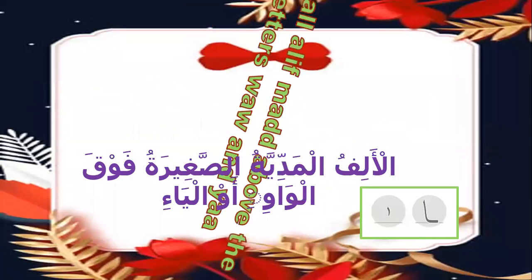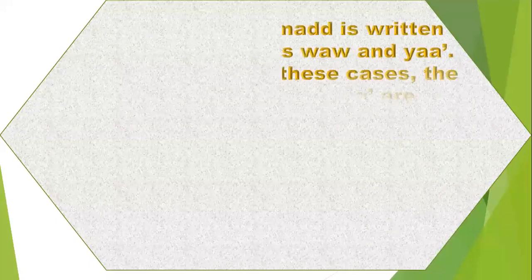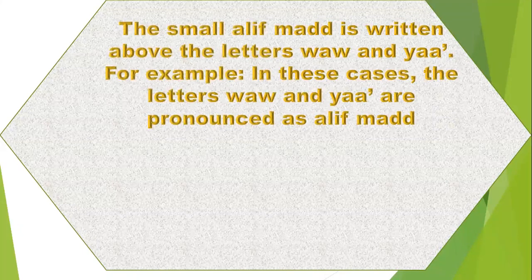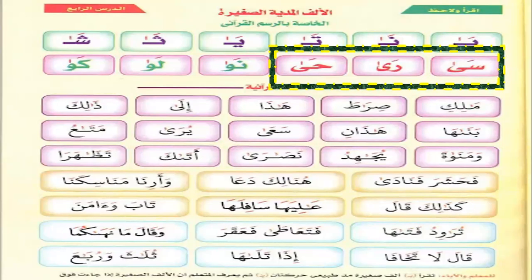Let's look at the small alif mad written above the letters waw and ya — al-alif al-madiyah. The small alif mad is written above the letters waw and ya. In this case, the letters waw and ya are pronounced as alif mad.